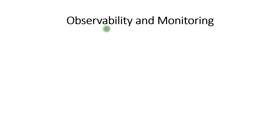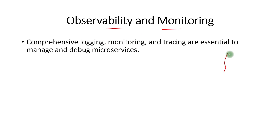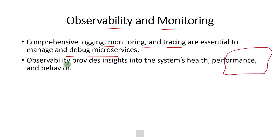The last principle is observability and monitoring. With monolithic applications there is only one place to check logs, so complexity is much less. But with microservices, potentially thousands of services are running at a particular time. Logging, monitoring, and tracing need to be done very carefully. Observability provides insights into the system's health, performance, and behavior at any point in time. Alarms and flags must be set up correctly to avoid false alarms, and chaos testing should be done regularly to test system resiliency.